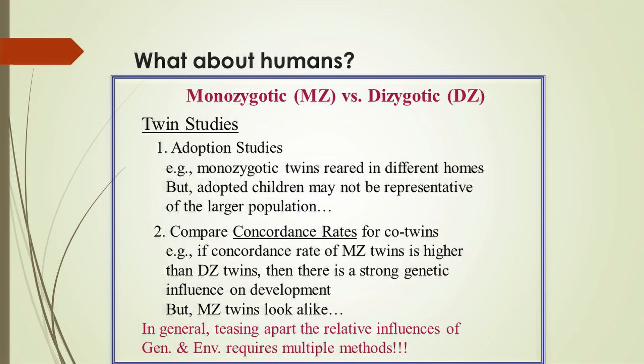On the other hand, dizygotic twins, or fraternal twins — di means two — so here we have twins coming from two different fertilized eggs. They share the same amount of genetic material as any other pair of siblings, which is about 50%.